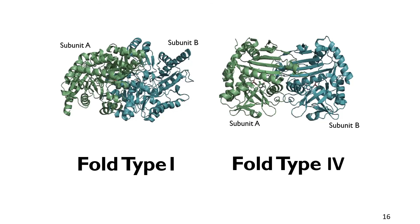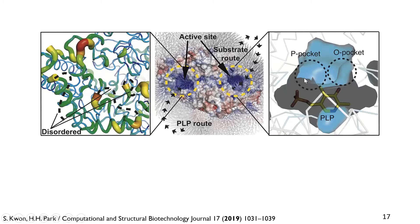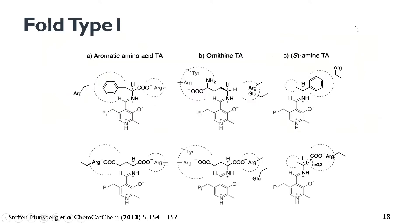The active site of transaminases consists of a P-pocket and an O-pocket. The P-pocket is the smaller pocket above the phosphate group of the PLP, and the O-pocket is above the oxygen group of the PLP. The P-pocket is responsible for binding the side chain, such as a methyl or ethyl group, while in the O-pocket we can bind an aryl, acyl, or carboxylic acid group. This is enabled by a so-called flipping arginine residue, shown here for fold type 1, which can either flip out of the active site when an aromatic compound is present, or form a salt bridge when a carboxylic acid group is present.